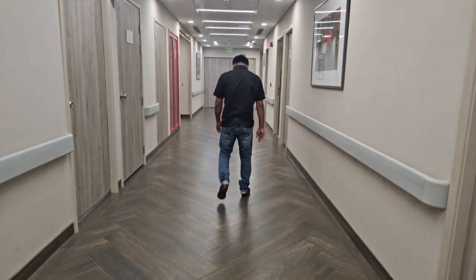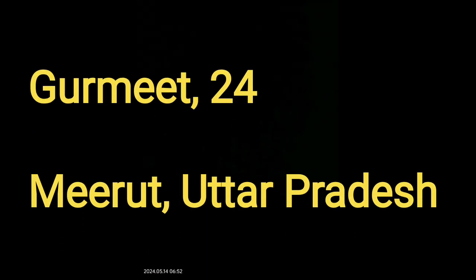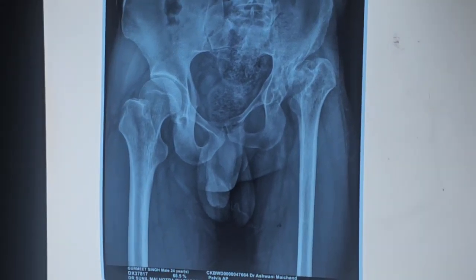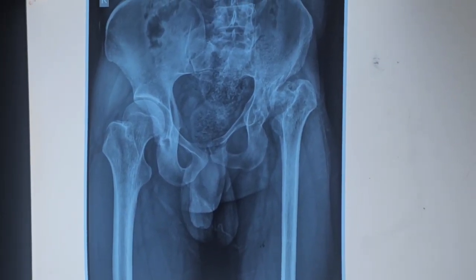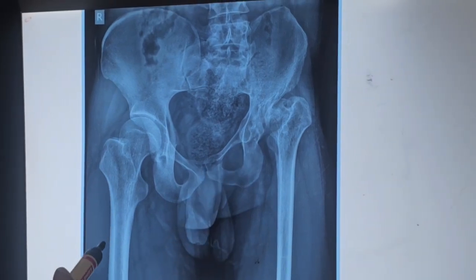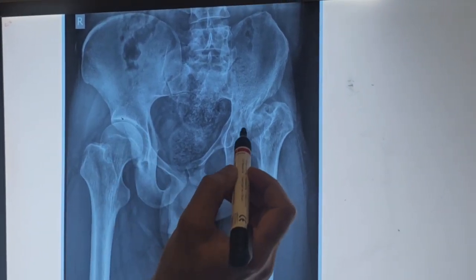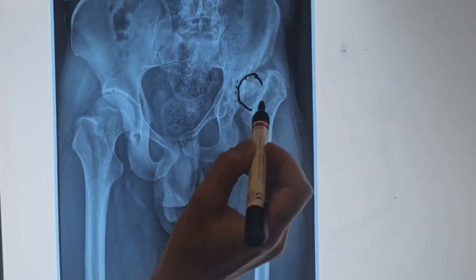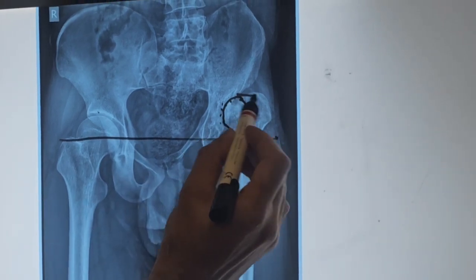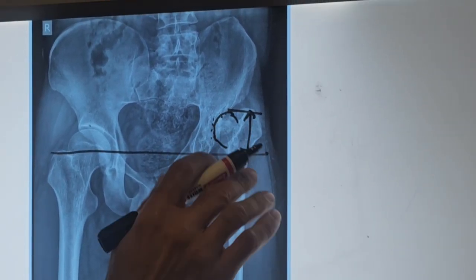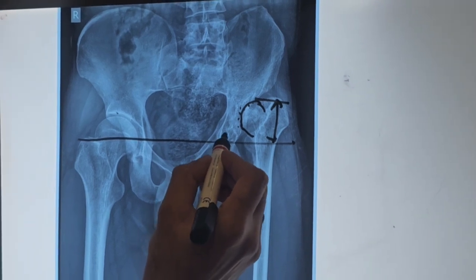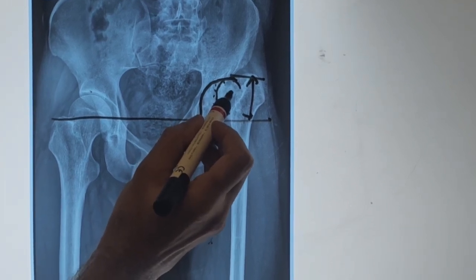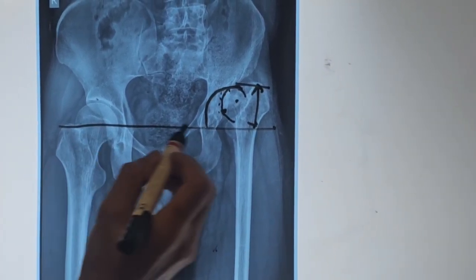This is our last patient's X-ray. This is Gurmeet, who came from Meerut, 24 years old. There was a problem in childhood. You can see the left side has not developed — the socket is there but the ball is very small, the head is very small and the neck is absent. The difference in leg length is significant. We need to place the socket at the correct anatomical center of rotation and equalize leg length using the trochanter as reference.